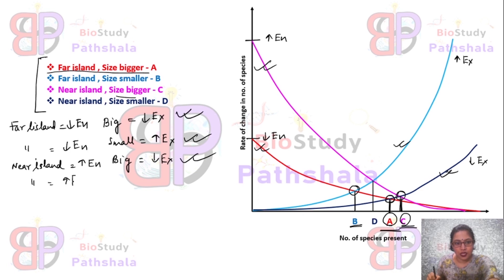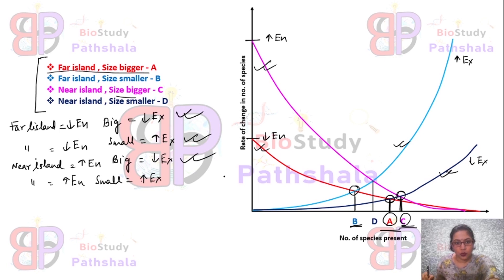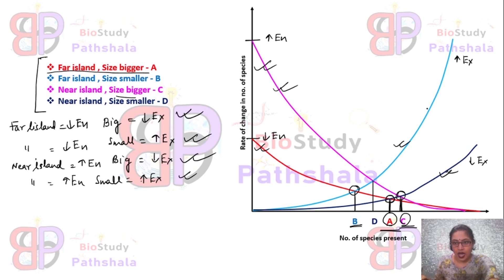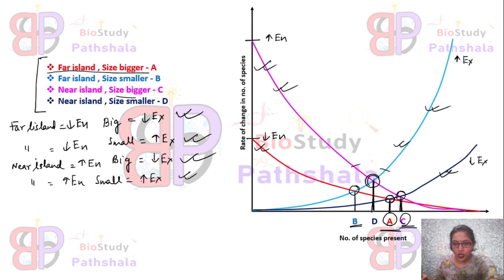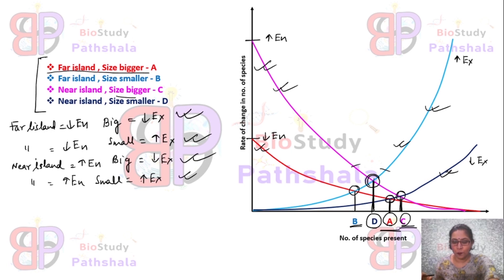The last condition is a near-small island, which shows maximum entry as well as maximum exit. The high entry and high exit curves intersect at a point representing the species count, labeled T. I hope the combined effect of both the distance and the size of the island on species richness is now clear.